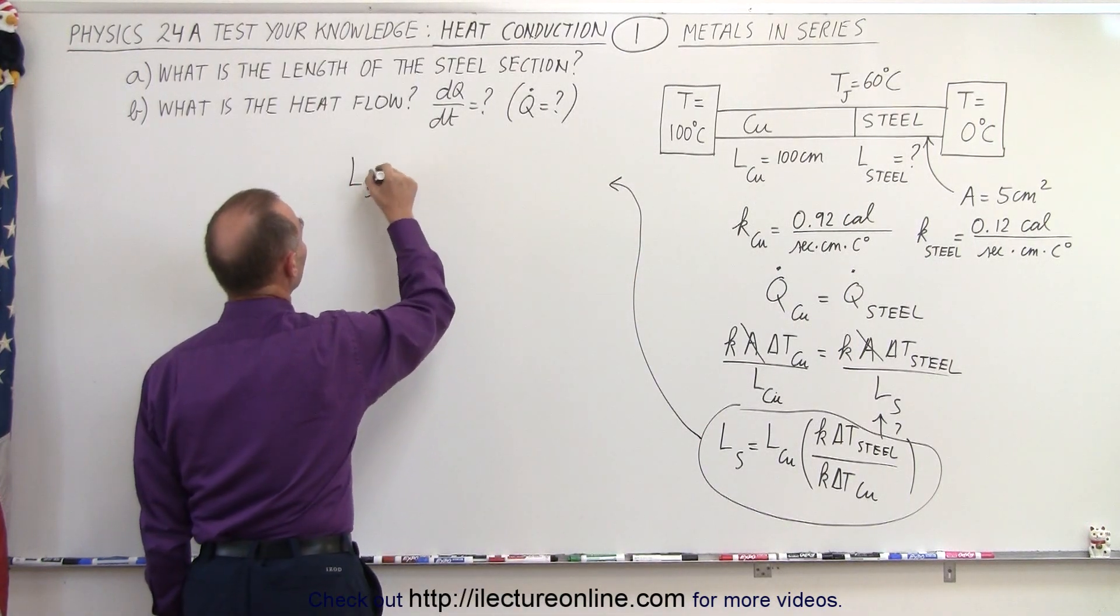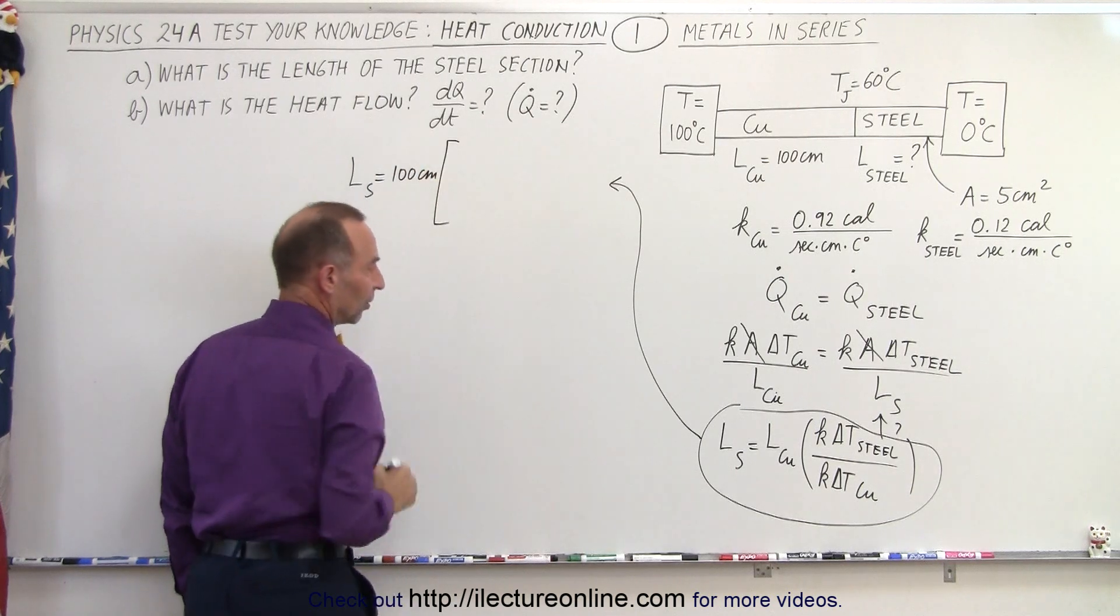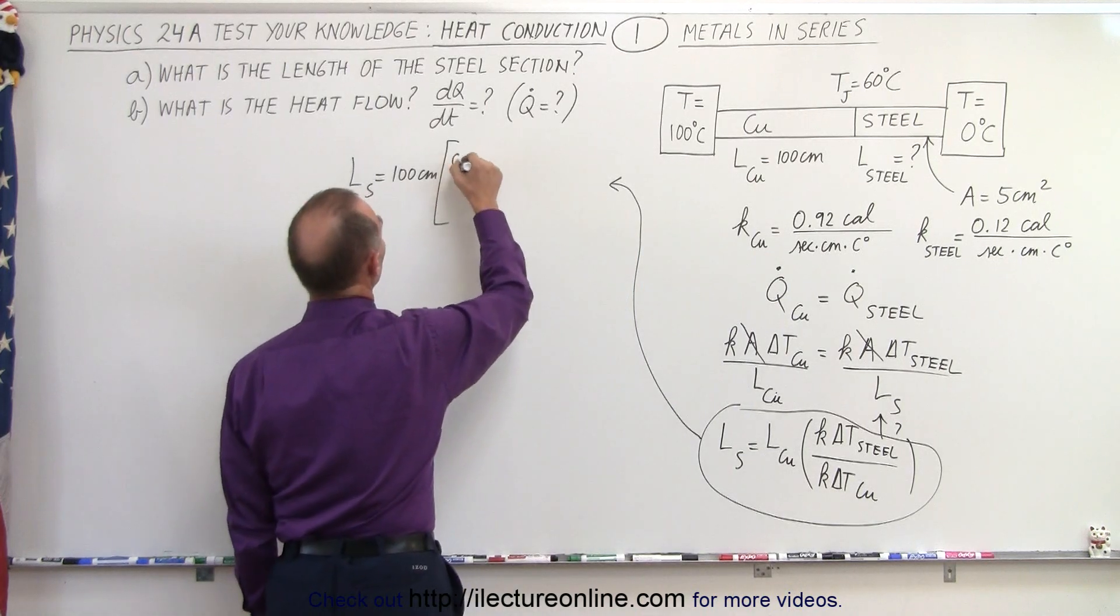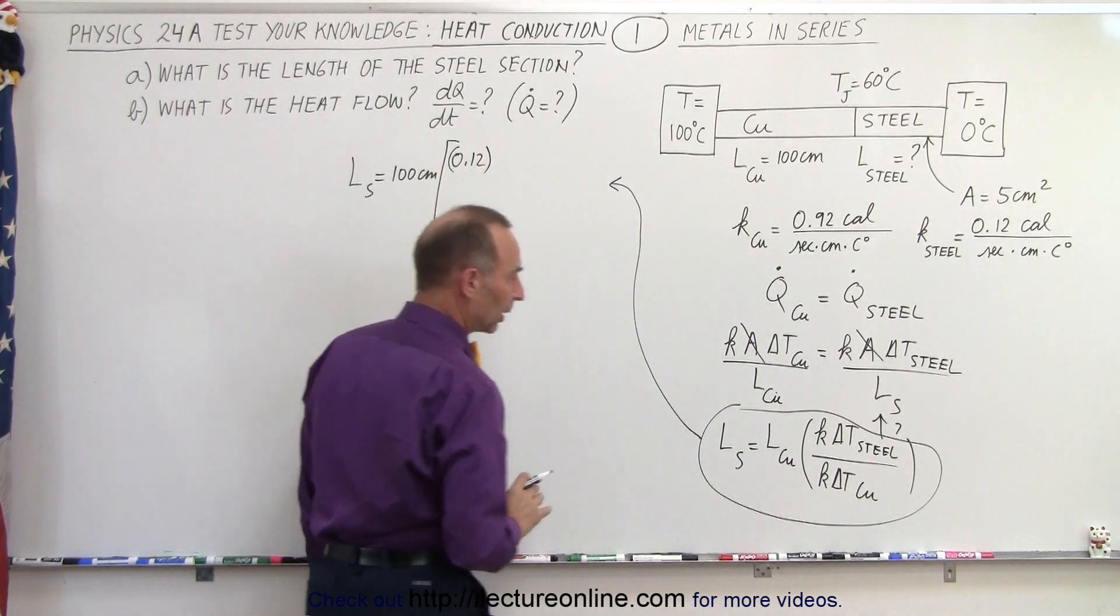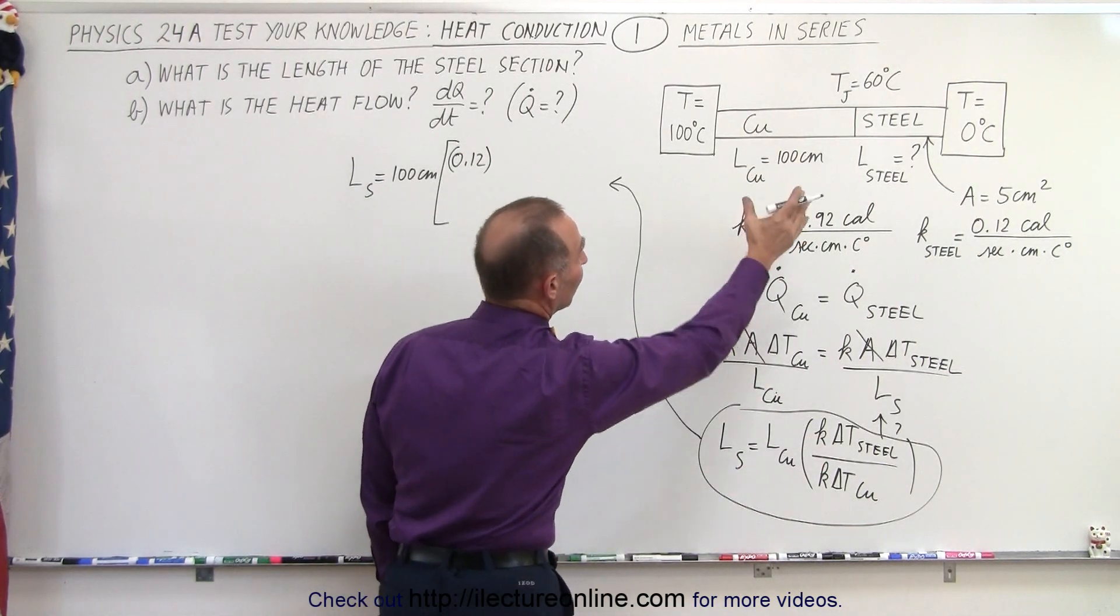Let's go ahead and solve the equation then. So the length of the steel is equal to 100 centimeters times k for the steel, which is equal to 0.12. And notice that the units will cancel out, so we can leave the units out.